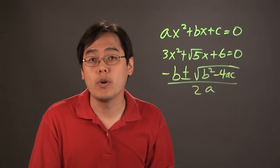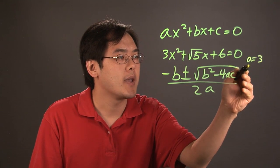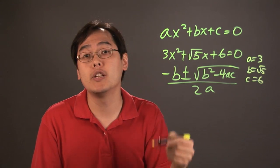Now, where you incorporate these radicals is just plug them in where they belong. So you know a is 3, b is square root of 5, and c is equal to 6. And all you need to do is plug them in.